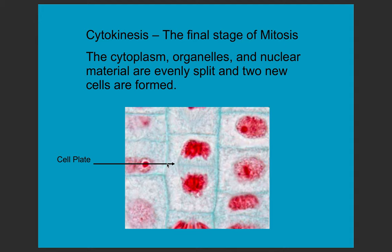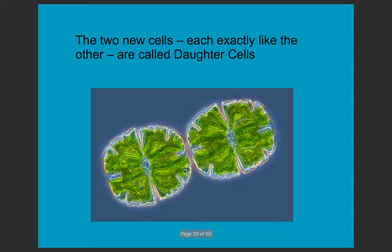Cytokinesis is not considered part of mitosis but is a different stage of the cell cycle. This is where the cytoplasm splits apart. For animal cells, microfilaments pinch off the cytoplasm and form a new membrane. In plant cells, this cell plate forms and turns into the cell wall. At the end of cytokinesis, we have two new cells — they are identical to each other and identical to their parent cell. So we have two new daughter cells formed from the one original parent cell.